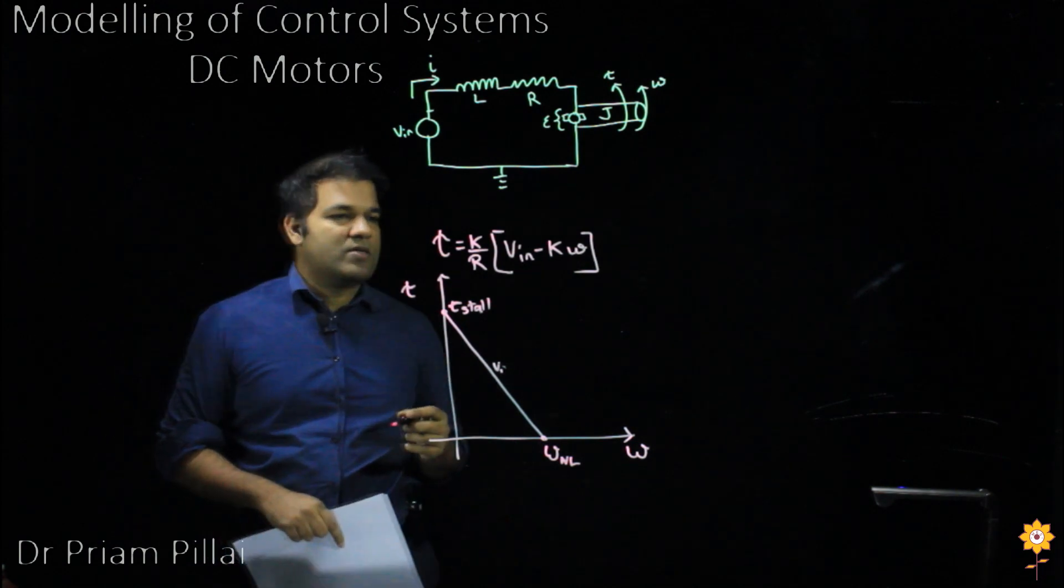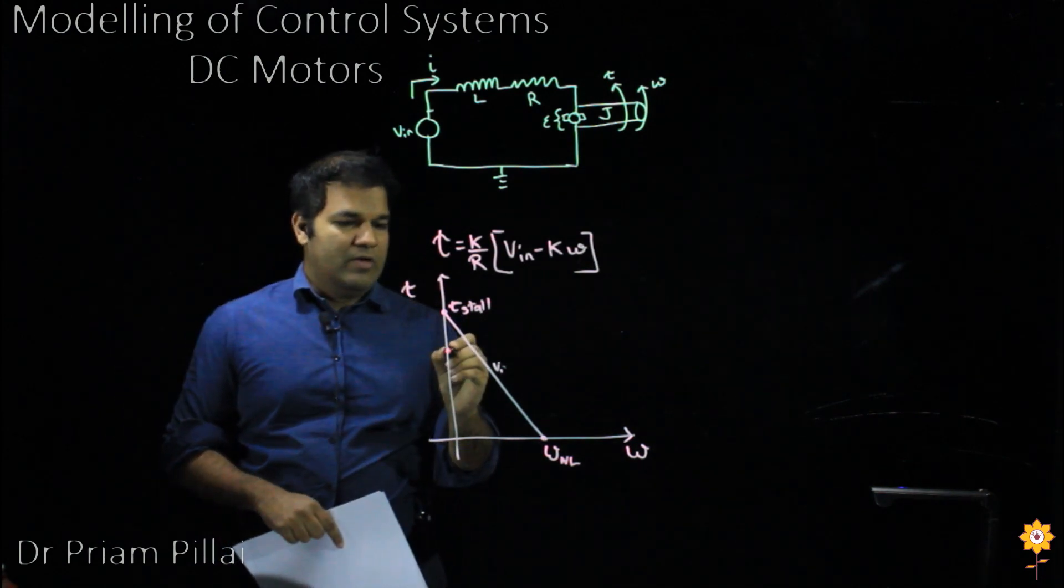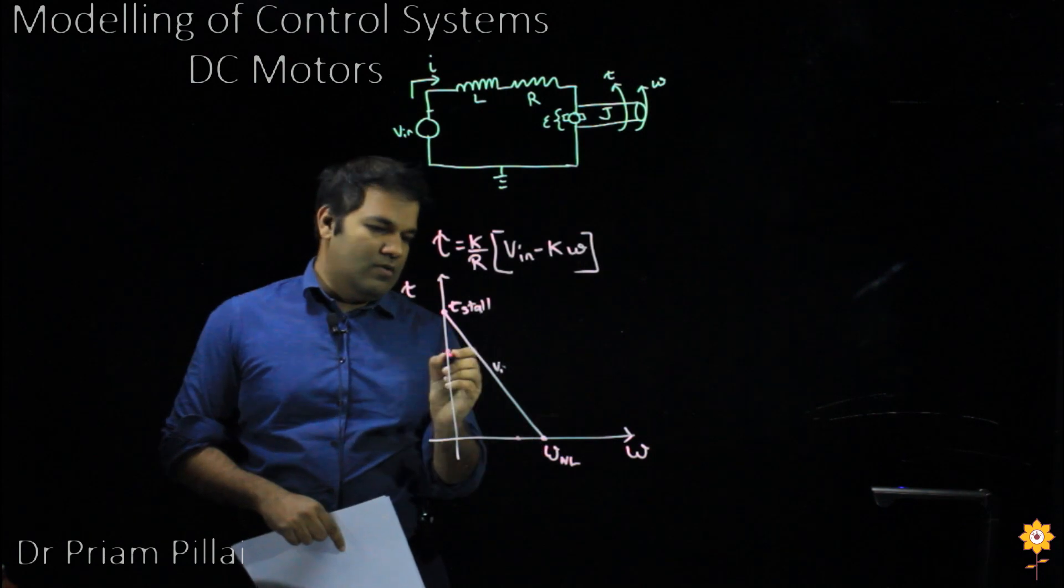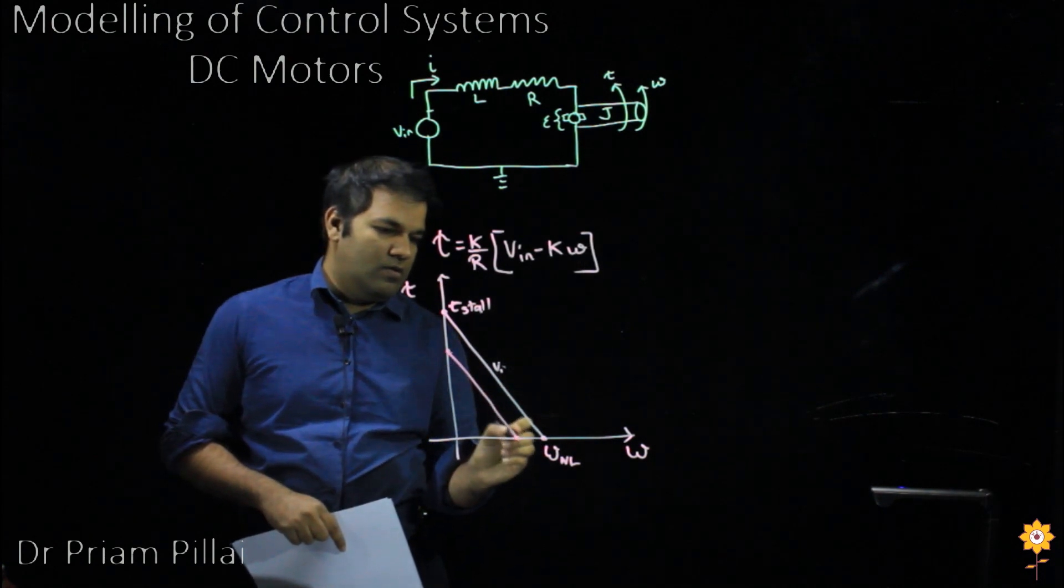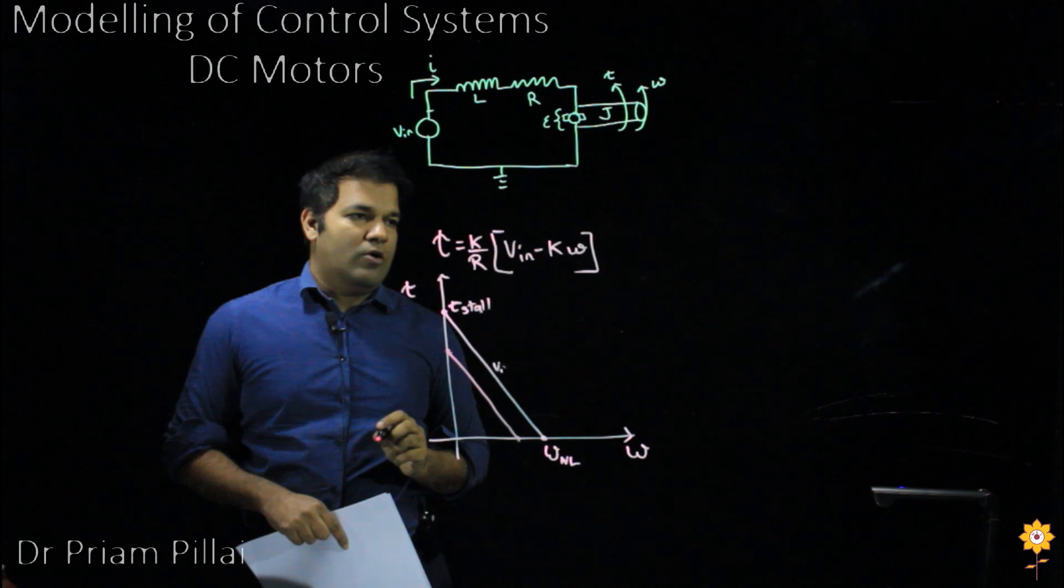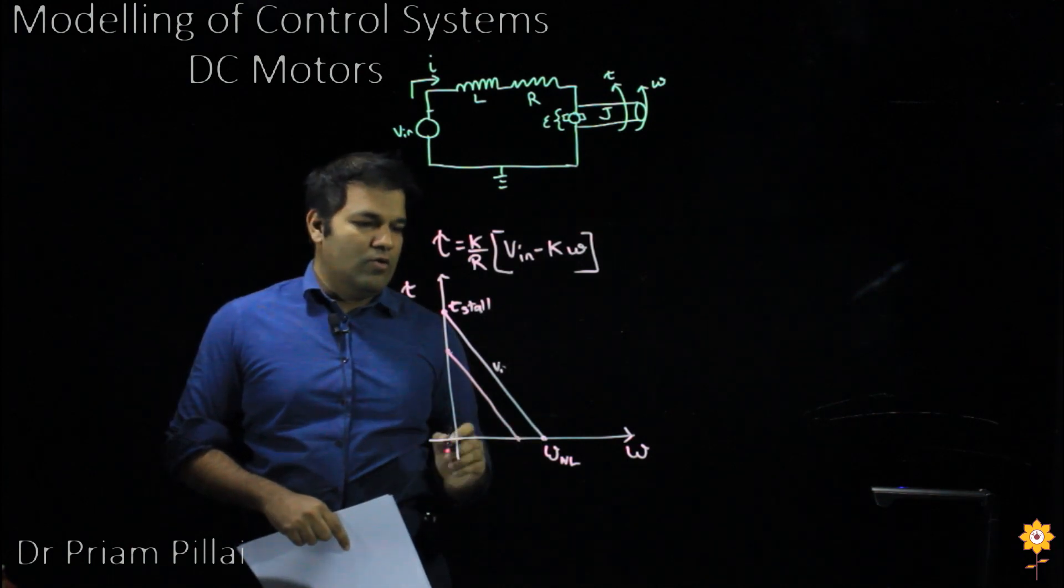Of course, at a different voltage, this graph would look a little bit different. It would still have the same slope, but it would have a different stalled torque and a different no load voltage.